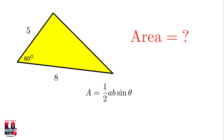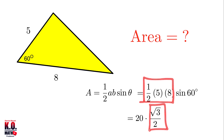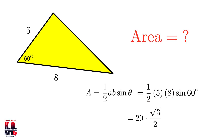Applying this formula we get one-half times 5 times 8 times sine of 60 degrees. Sine of 60 degrees is equal to the square root of 3 over 2, and one-half times 5 times 8 is equal to 20. Therefore the area of this triangle is equal to 10 square root of 3.